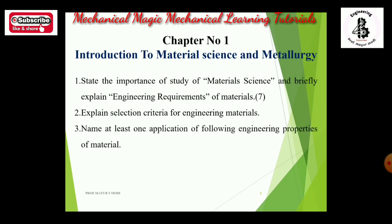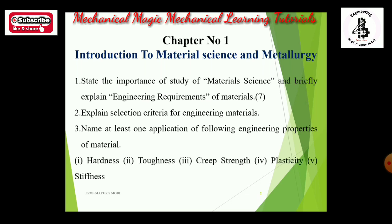Name at least one application of the following engineering properties of materials — this is important from the examination point of view. The properties include hardness, toughness, creep, strength, plasticity, and stiffness. Either a property will be given and you should write its applications, or an application will be given and you should write which properties are required for that application. At least one 7-mark question is from chapter number 1.